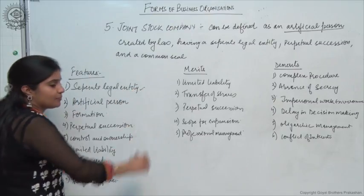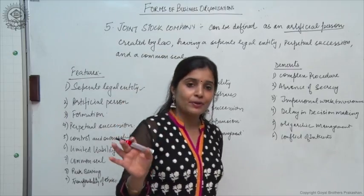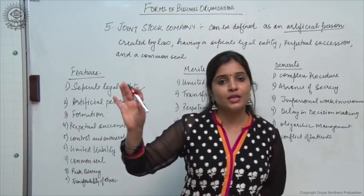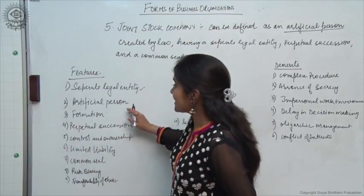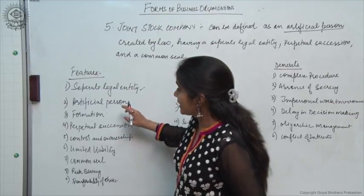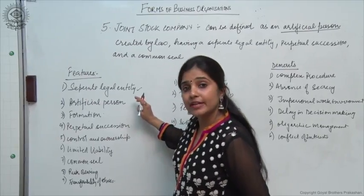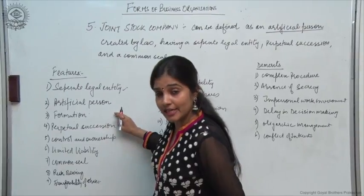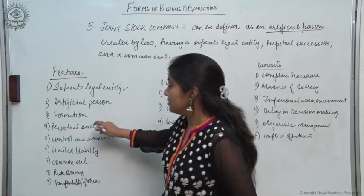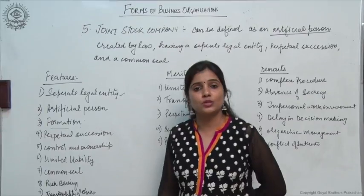Separate legal entity means the company has an entity separate from that of its owners. It is considered a separate person from the owners. It is an artificial person — not like a natural person which can be seen, touched, and felt. It is created by law, capable of entering into contracts, signing deals, suing people and being sued. Formation: it is formed as per the provisions of the Companies Act 2013, and whatever legal formalities are required must be necessarily performed.